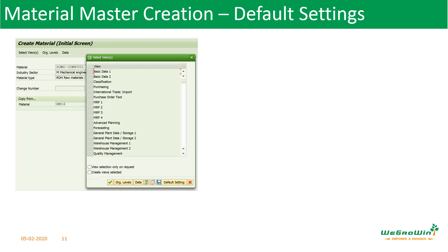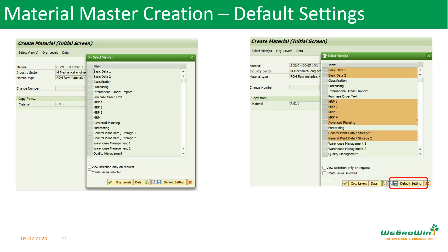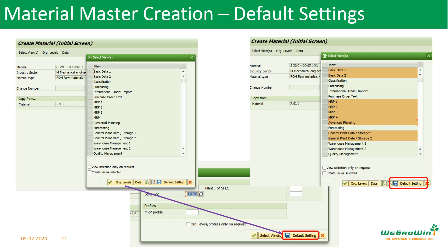While creating a fresh material code, after entering the material code, industry sector, and material type, press Enter. The system may provide all the views, but we may not be interested in maintaining all the views. So we can select the views and save them using the default setting button. Next time when we open this, only those selected views will appear. Similarly, to reduce workload, we can also define what organization details we need — like plant details and storage location details — and save them. So whenever we create or display materials, these views and organization details will appear by default, reducing the workload.